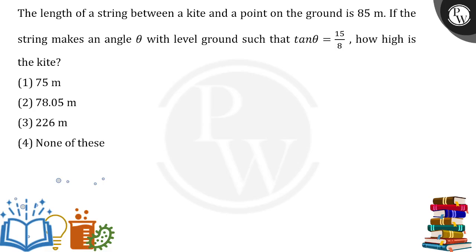The length of the string between the kite and a point on the ground is 85 meters. The string makes an angle theta with the level ground such that tan θ = 15/8. How high is the kite?